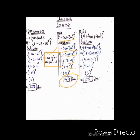اگلا question: (9 + 4ω + 4ω²)^3۔ یہاں پہ 4 common لیں، اندر (ω + ω²) رہ جائے گا۔ ہم ω کو common اس لیے نہیں لیتے کیونکہ ہمیں آگے property لگانی ہوتی ہے۔ ω + ω² کی جگہ -1 رکھیں، تو 4 × (-1) = -4۔ 9 - 4 = 5، power تین ہے، تو 5^3 = 125۔